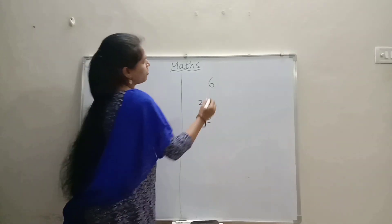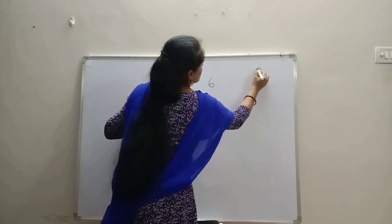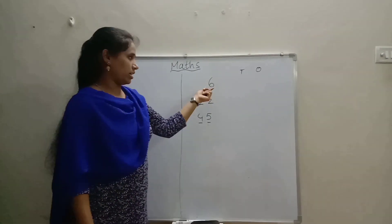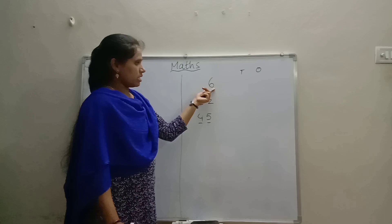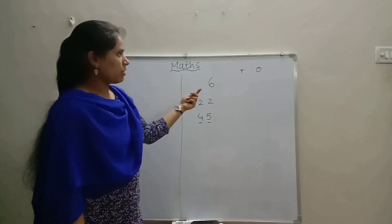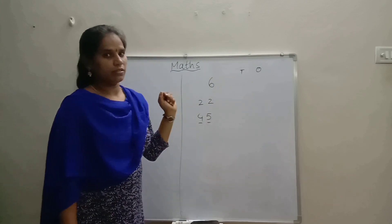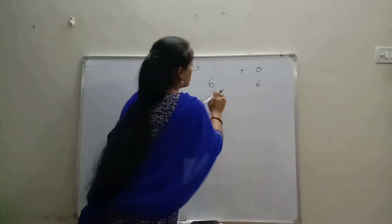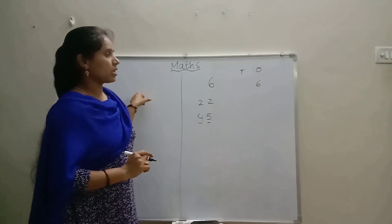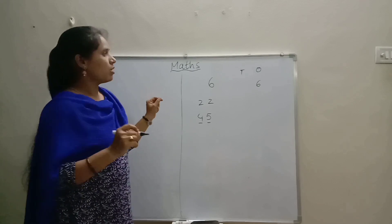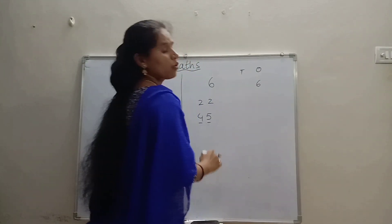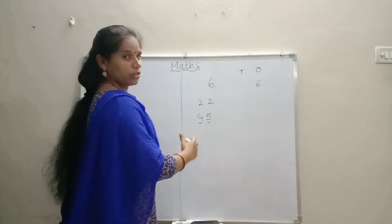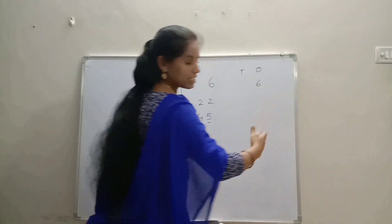Okay children, where do we mention ones and tens? For example, first we take the number six. Six is a single digit, right? So where do we mention ones or tens? Yes, ones. Why? Six is a single digit. And children, be careful. When we mention place values, we are starting from the right side. Okay, don't go to the left side.